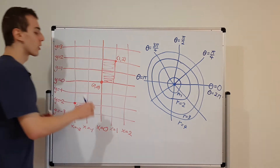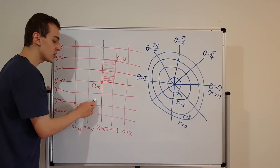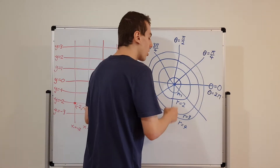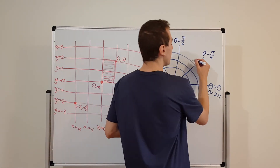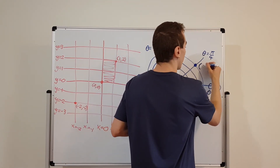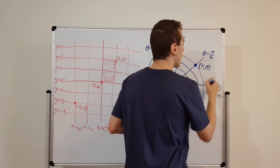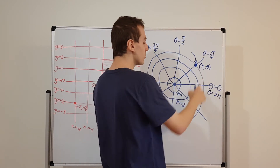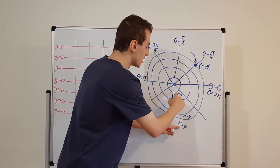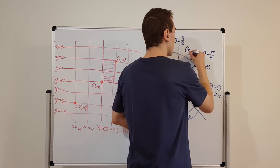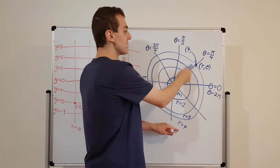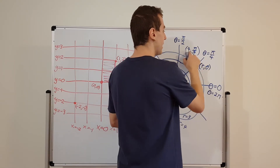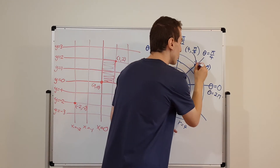So the two coordinates for Cartesian are x and y, and for polar coordinates we use r and theta. Any point can be described as (r, theta). For example, this specific point sits on the r equals 4 circle, so r equals 4. And the angle is pi over 4. We've specified a unique combination of r and theta associated with that point.